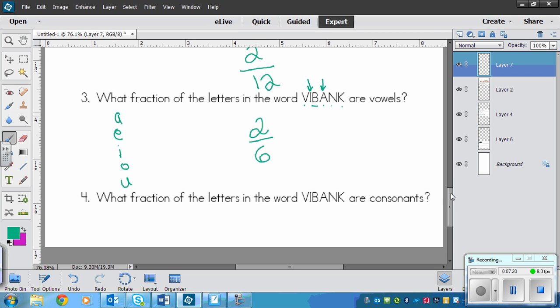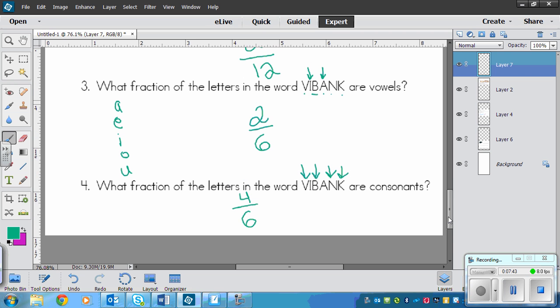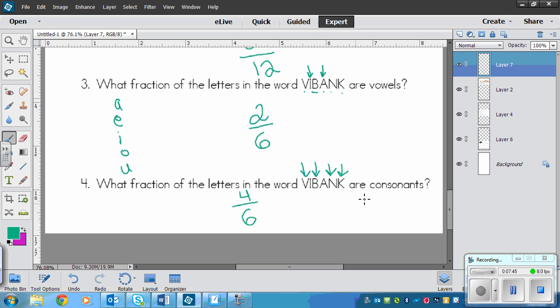This one's asking for consonants. That's anything that is not a vowel, so any letter except these ones. So that tells me that that's going to be a V, a B, an N, and a K. That is four, four out of six or four sixths. That's hard to say. That's the fraction of the set.